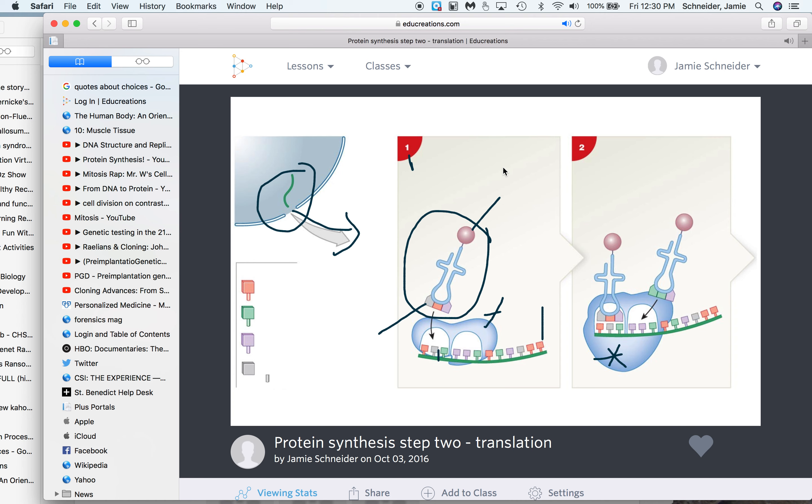Then a second tRNA is going to come up and bind to the next codon by its anticodon, and the second amino acid is in place.